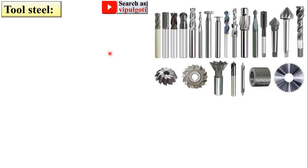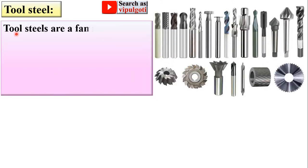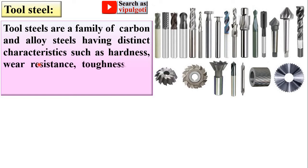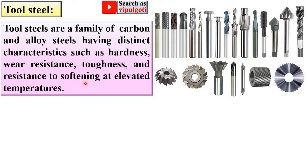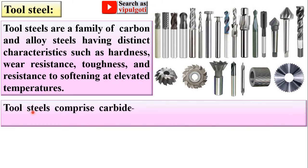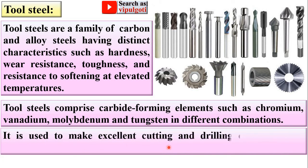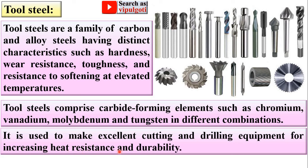Tool steels are a family of carbon and alloy steels having distinct characteristics such as hardness, wear resistance, toughness, and resistance to softening at elevated temperatures. Tool steels comprise carbide-forming elements such as chromium, vanadium, molybdenum, and tungsten in different combinations, which improve these properties. Tool steel is used to make excellent cutting and drilling equipment, with increased heat resistance and durability.